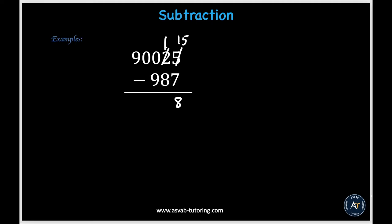Now when we go on to the tens place, we have 1 minus 8. And because 1 is less than 8, we'll need to borrow a 10. But we have a problem — in the hundreds place and the thousands place, we have two zeros. So we can't borrow anything there to make this 1 a bigger number. So we can borrow a 10 from the ten-thousands place because it has a 9. So this 9 will become an 8, and we'll make this zero in the thousands place into a 10.